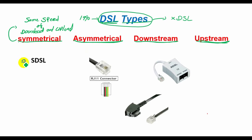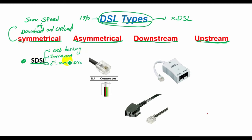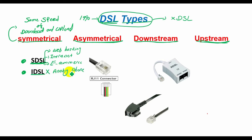Symmetric DSL, or SDSL, is a version that offers the same speeds for uploads and downloads, suitable for business applications such as web hosting, intranets, and e-commerce. It is not widely implemented in the home or small business environment and cannot share a phone line. ISDL is a symmetric type of DSL commonly used in environments where SDSL and ADSL are unavailable. ISDL does not support analog phones.